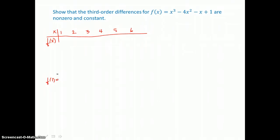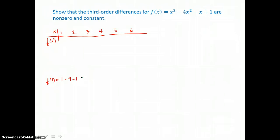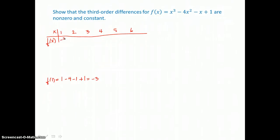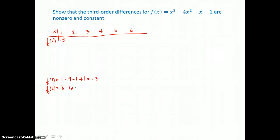Finding f of 1 for our table, I'll put 1 in for x in the function. 1 cubed is 1, 1 squared is 1 times negative 4 is negative 4, minus 1 plus 1, so I'm getting a function value of negative 3. I'll put that in my table. Now I need to find f of 2: 2 cubed is 8, 2 squared is 4 and 4 times negative 4 is negative 16, minus 2 plus 1, so I'm getting negative 9.